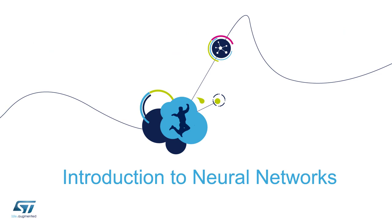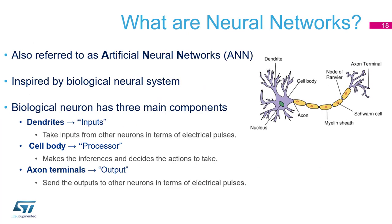Let's come back to school. I think all of you remember this structure — the biological neuron. We have the cell body, we have dendrites and axon terminal. Dendrites are the equivalent of the neuron inputs, the cell body is equivalent of our processor, and the axon is our output.